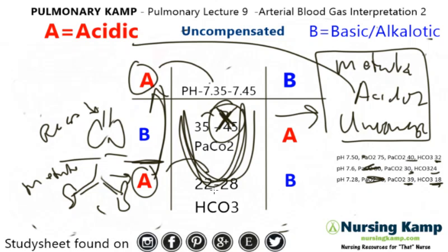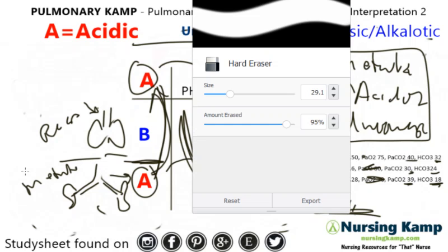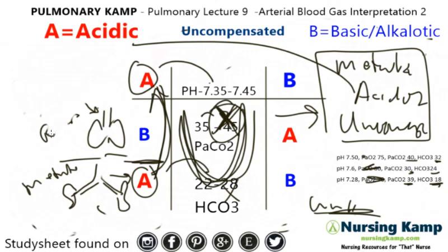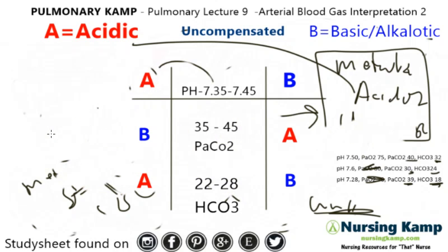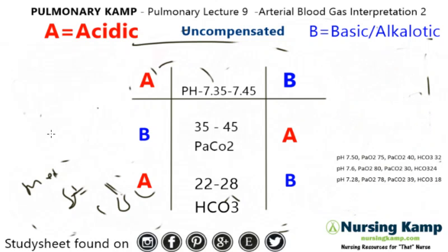Generally you might just need basic interpretation, but sometimes they'll ask whether it's uncompensated, partially compensated, or compensated. My next lecture will cover partially compensated ABGs. The recap: connect the letters, and if you have one value landing in the middle, it's uncompensated metabolic acidosis, alkalosis, or respiratory equivalent. My name is Camp and this is Nursing Camp — scribble notes on nursing found on nursingcamp.com, Pinterest, Facebook, and Instagram. Please follow and we'll see you next time.